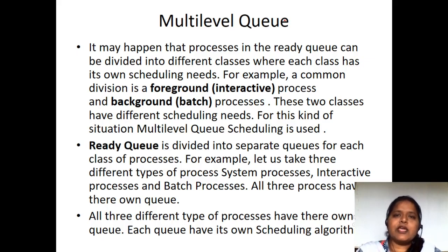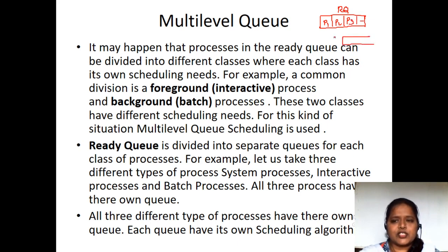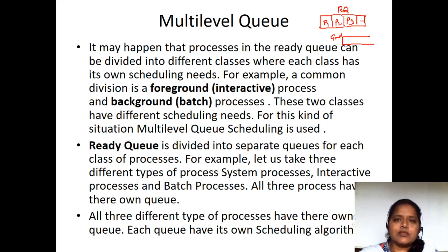In the previous classes, what we have seen is we make use of a single ready queue. In that ready queue, we place all the processes — P1, P2, P3 — and from the ready queue we prepared the schedule chart. So we were maintaining only a single queue for all the processes. The question is: how fair is it to make all processes reside in a single queue? That led to the idea of the multi-level queue.